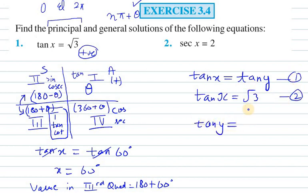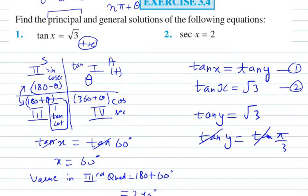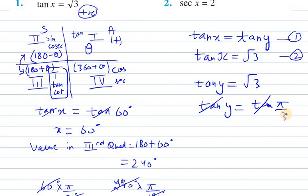In the last previous section, what we did is tan π/3 equals √3. So therefore, what we can write is tan y equals tan π/3. So tan and tan gets cancelled out, and we are left with π/3 here. Therefore, the value for y is π/3.